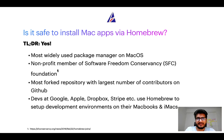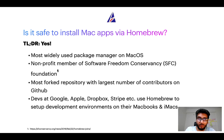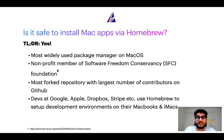Many other open source projects like Git, Busybox, Samba, and Vim are all part of this Software Freedom Conservancy organization. Also, you might be surprised to know that Homebrew is the most forked project on GitHub and has the largest number of contributors on its GitHub repository. Many devs at organizations like Google, Apple, Dropbox, and Stripe use Homebrew to set up different development environments on their MacBooks and iMacs.